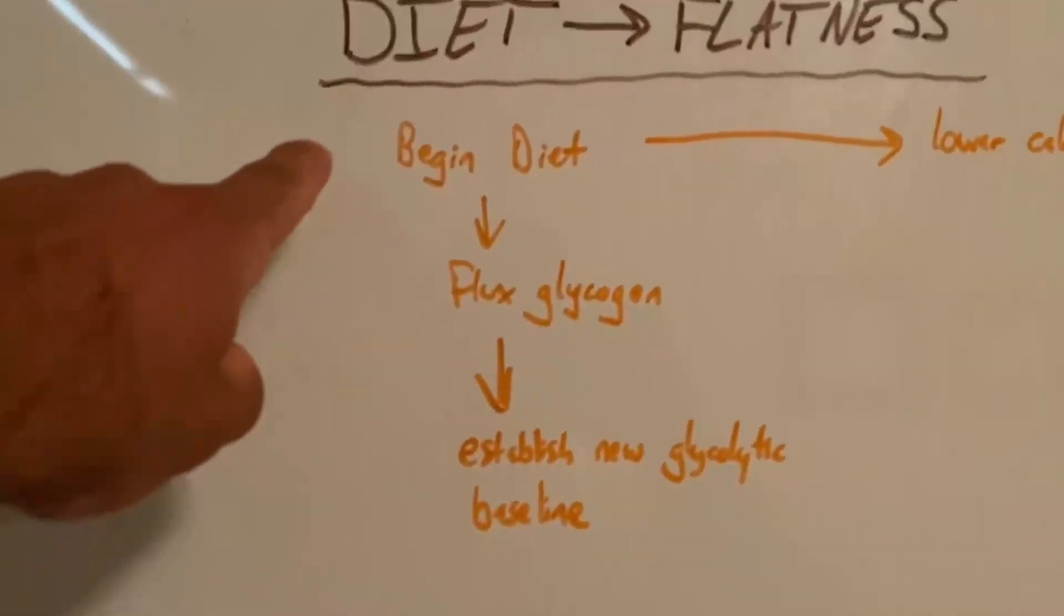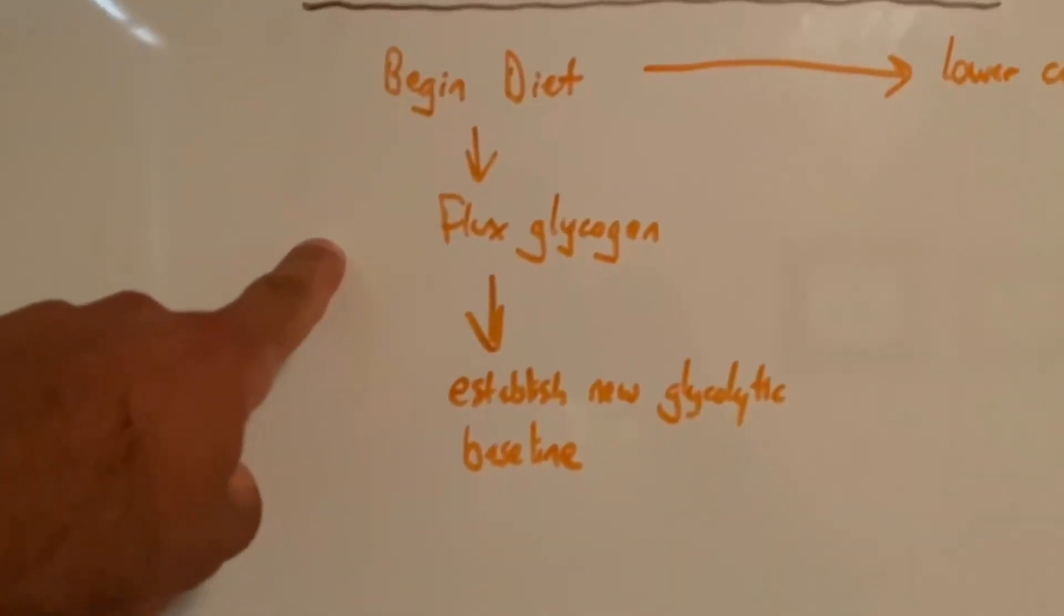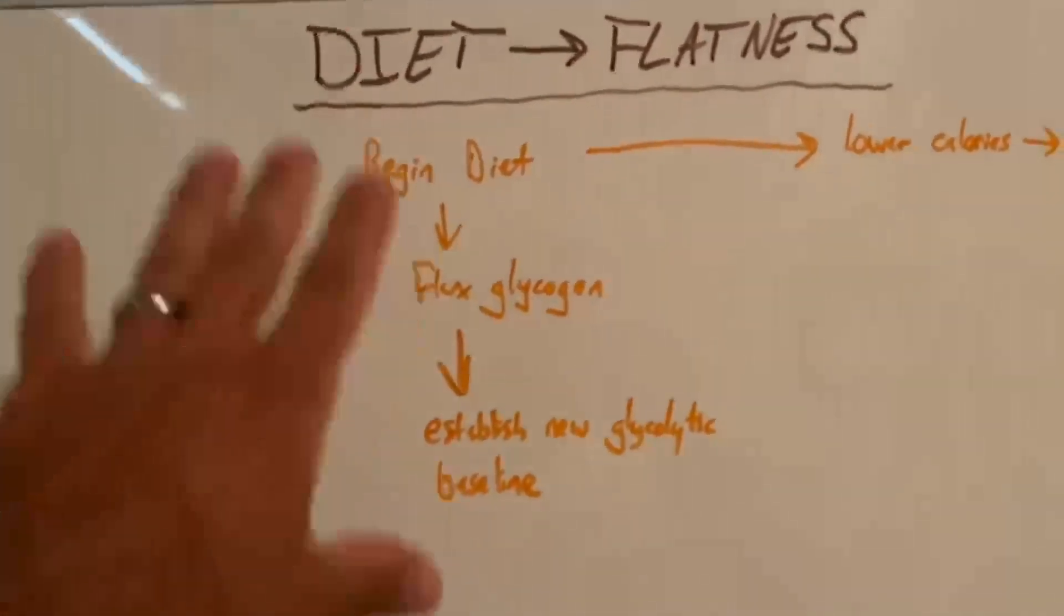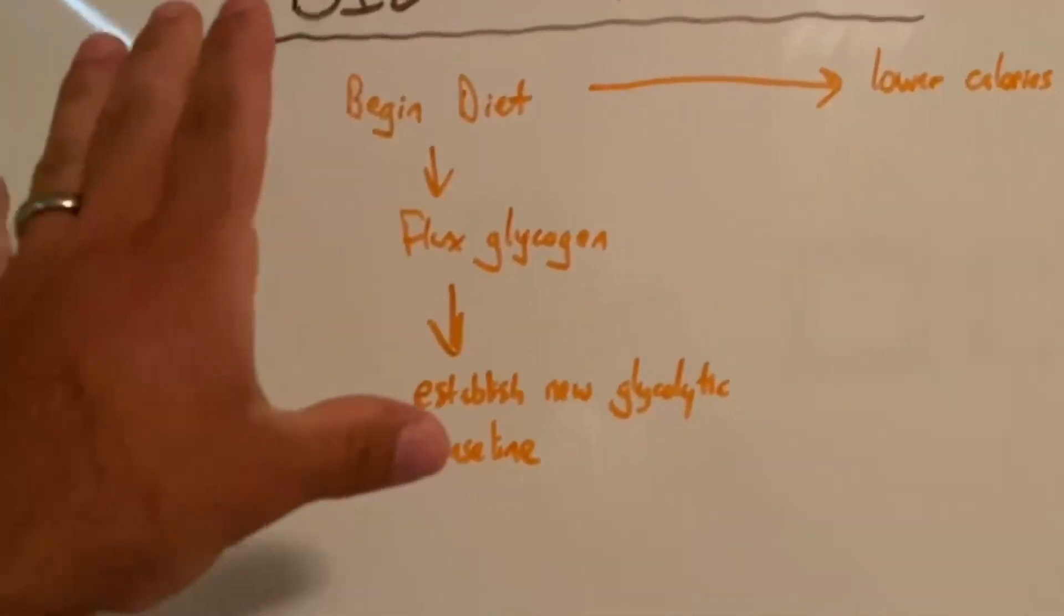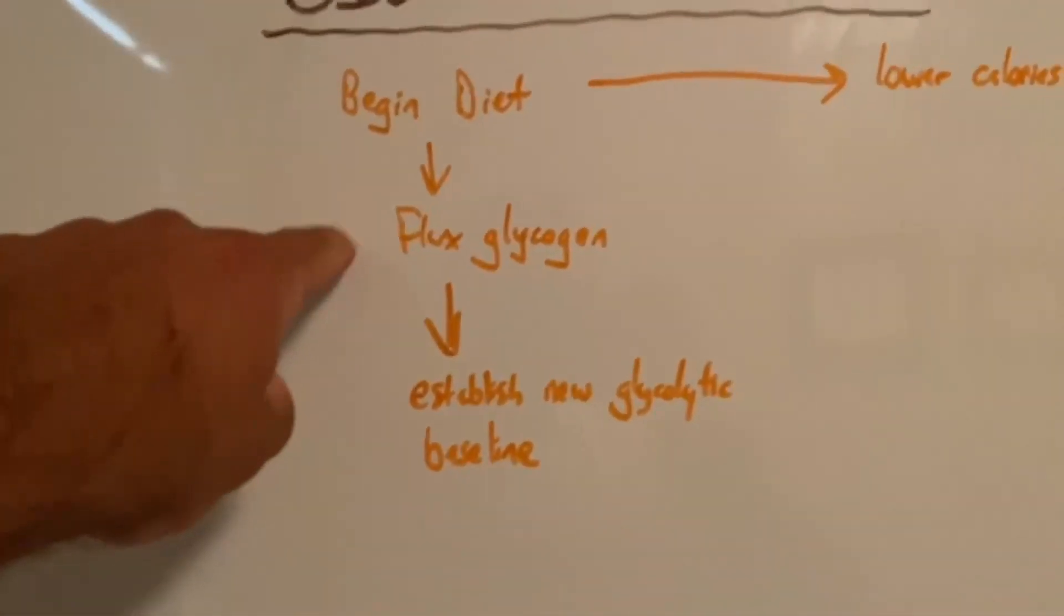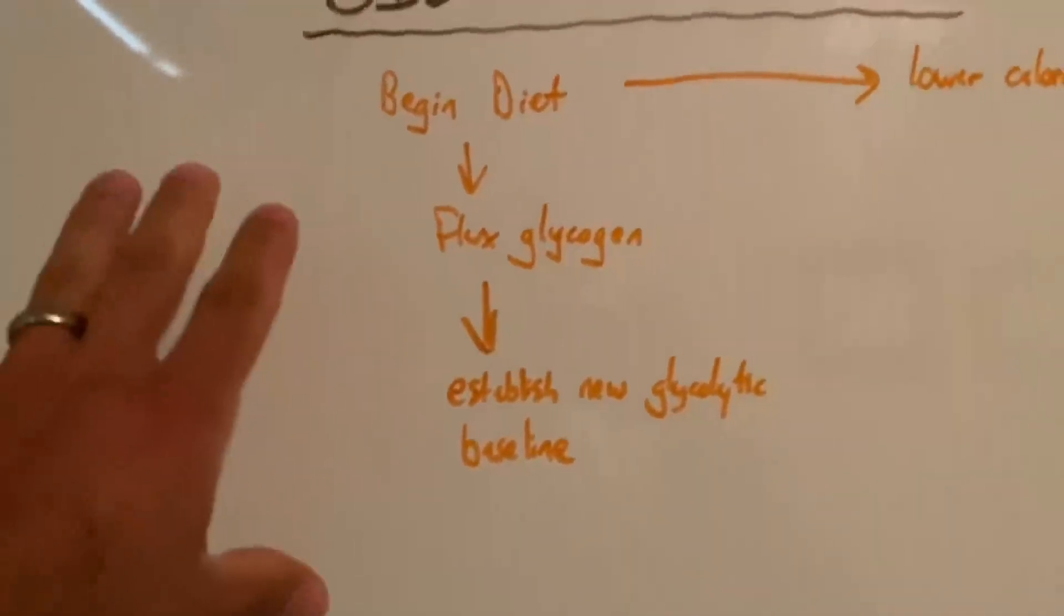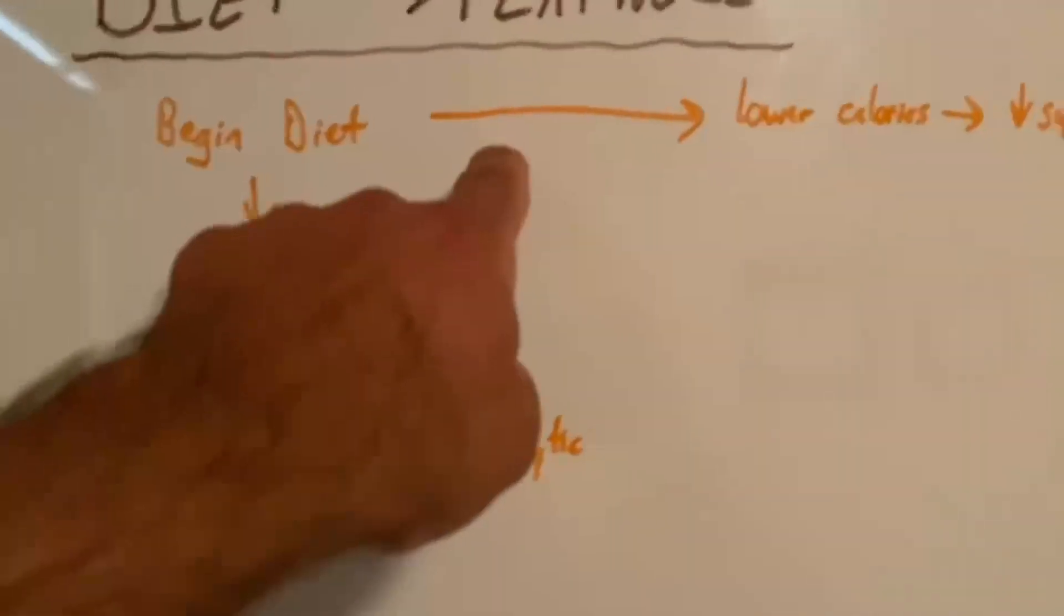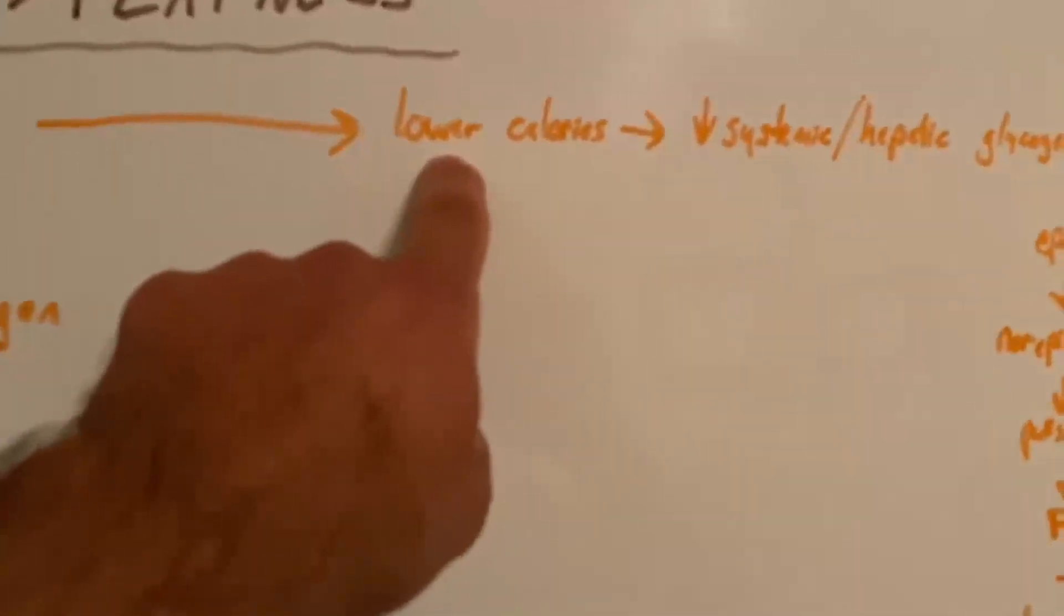What's happening, this is as simple as I can put it. We begin our dieting, we are fluxing glycogen, and we are establishing a new glycolytic baseline. That's essentially as easy as it happens. Everything's happening here in an offshoot on what's going on with stored fatty acids in our adipocytes, so fat cells.